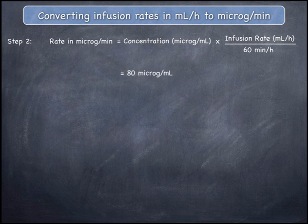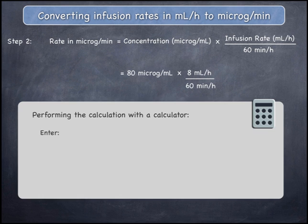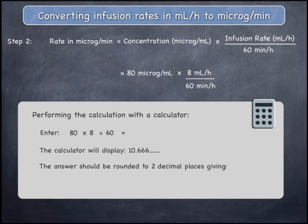This gives 80 micrograms per mL multiplied by 8mL/h divided by 60 minutes per hour. To perform this on a calculator, enter 80 multiplied by 8 divided by 60 and then press equals. The calculator will display an answer of 10.666. This answer should be expressed to two decimal places, and therefore the final answer is a rate of infusion of 10.67 micrograms per minute.